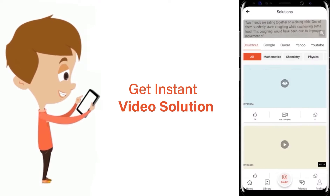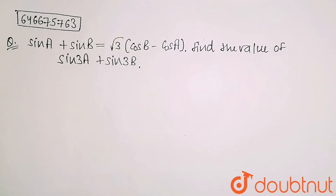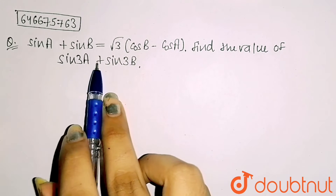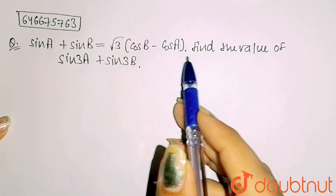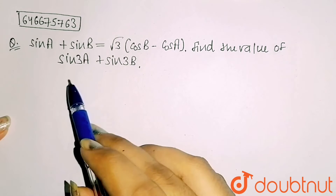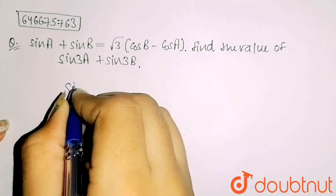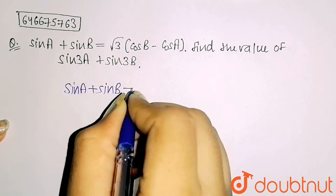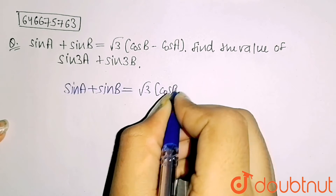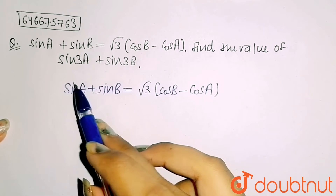Hello friends. In this question it is given that sin A plus sin B equals root 3 times cos B minus cos A. We have to find the value of sin 3A plus sin 3B.